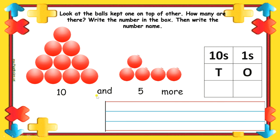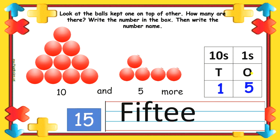Next 10 and 5 more which becomes 15. In this, we write 5 in 1's place and 1 in 10's place. So, 1 and 5 becomes 15. F-I-F-T-E-E-N.